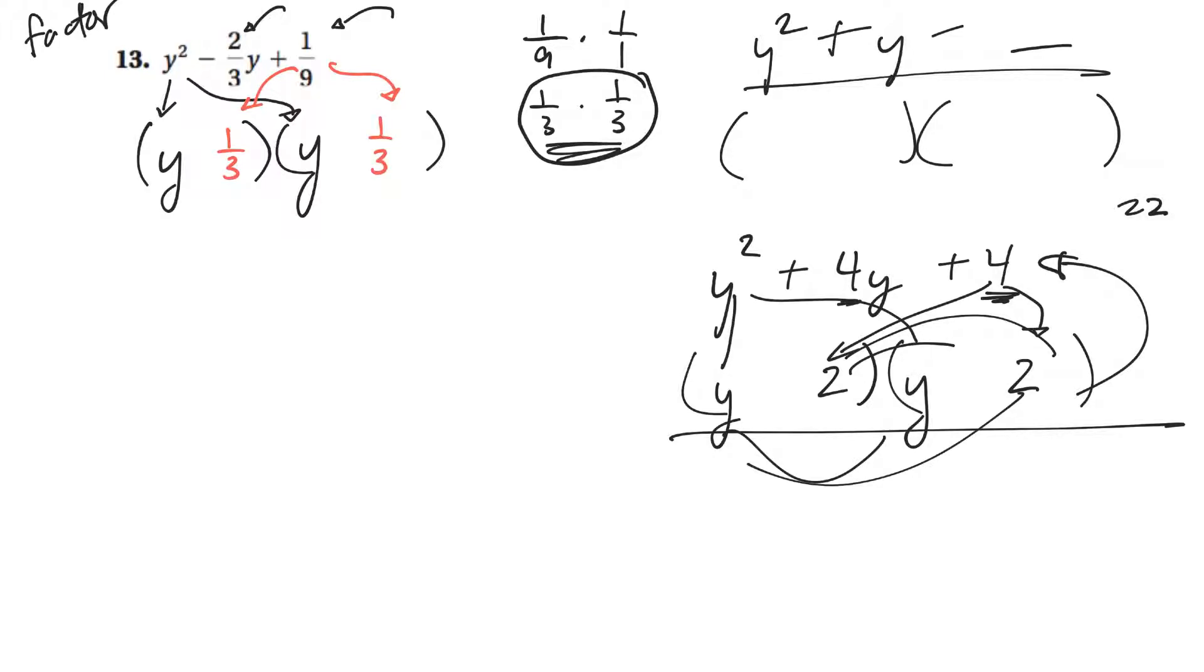Another rule: if this last sign is positive, it means both signs have to be the same. And then this tells you what they both have to be. So the positive says both signs are the same. This says that both have to be negative. Okay, so that's my best guess.